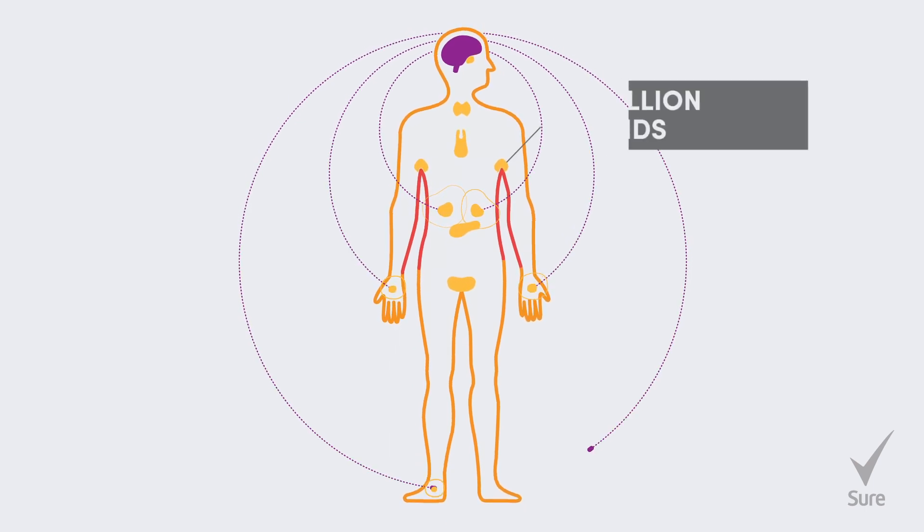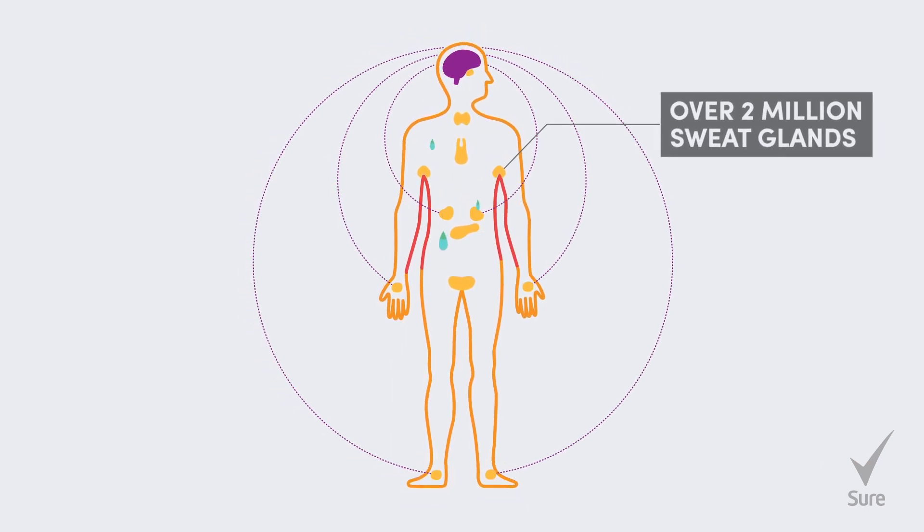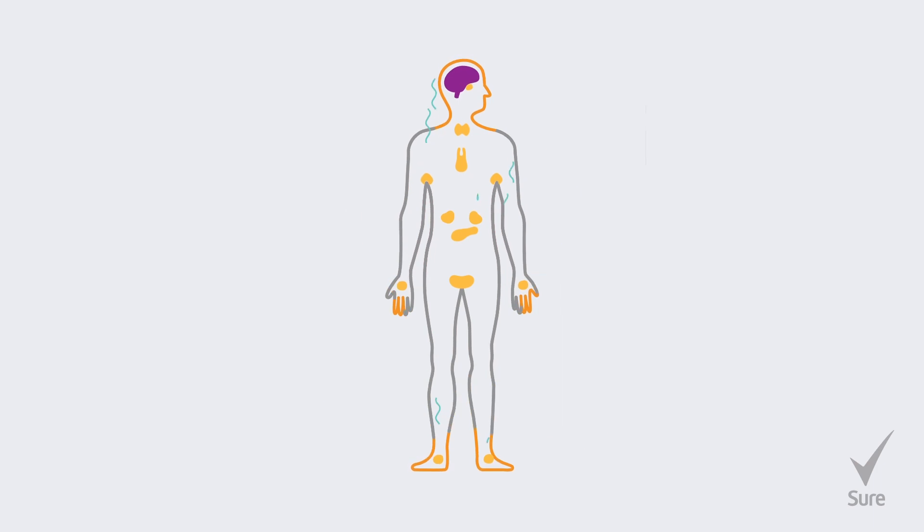Your brain sends signals to over 2 million sweat glands, telling them to release a clear fluid. As this fluid evaporates from your skin, it lowers your body temperature.